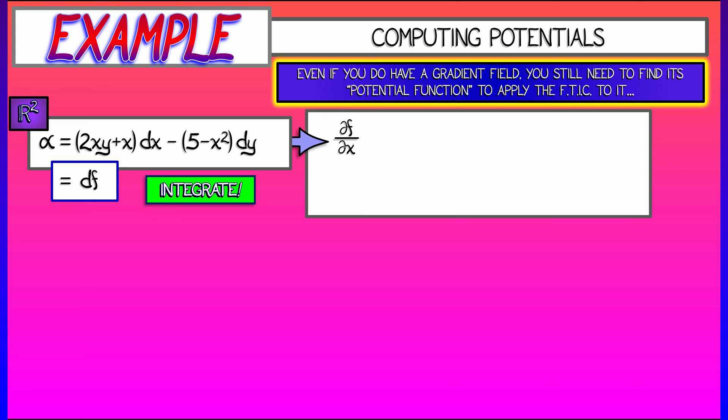I know that that first component, 2xy + x, is really partial f partial x. So to get f, I simply integrate with respect to x. What does that give me? Well, that gives me x²y + ½x². Oh, wait a minute. I think I'm forgetting something. Oh, that's right. I forgot the constant. I've got a constant there. But this is not a constant constant. It's a constant from the perspective of x. That means this constant might depend on y.